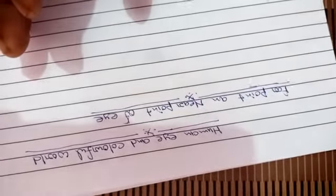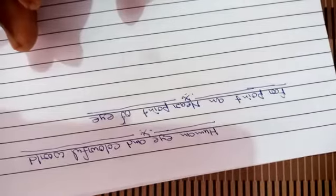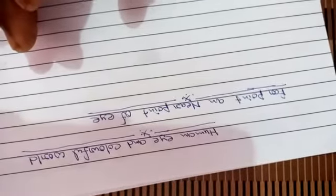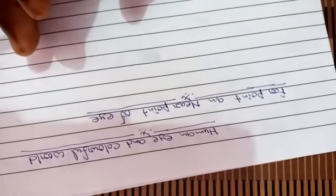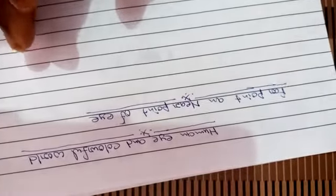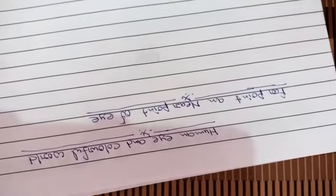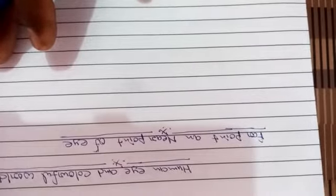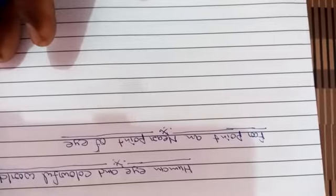हम जानते हैं जो हमारी आँख है उसका अपना power of accommodation होता है, यानि कि वो object के according अपने focal length को adjust कर लेता है। और उसका object का image रेटीना पर clearly form करना शुरू कर देता है। लेकिन हमारी आँखों की भी एक limit है। There is a limit beyond which focal length of eye lens cannot be decreased, and consequently there is a limit of power of accommodation of eye.